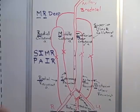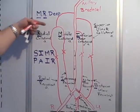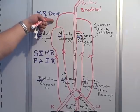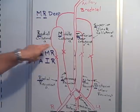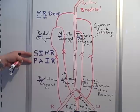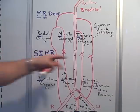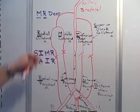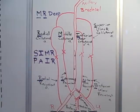That's pretty much it. 'Mr. Deep' gets you started — this is the deep brachial or profundus brachii artery. Use M and R to get middle and radial. Then jot down the mnemonic SIMR PAIR — S-I-M-R on top, P-A-I-R below — that tells you which collateral and recurrent arteries anastomose together. Good luck!